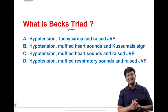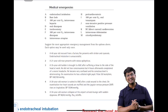Before starting with the emergencies, please answer this question in the comment box: What is Beck's triad? The options are: (A) hypotension, tachycardia, raised JVP; (B) hypotension, muffled heart sounds, and Kussmaul sign; (C) hypotension, muffled heart sounds, and raised JVP; (D) hypotension, muffled respiratory sounds, and raised JVP. Answer in the comment section and I'll reply.